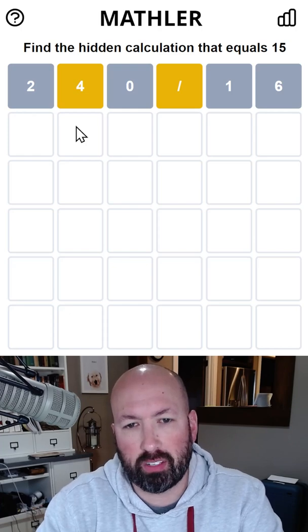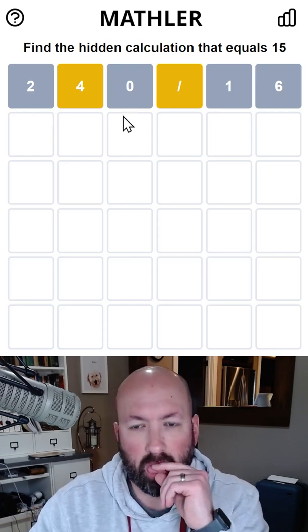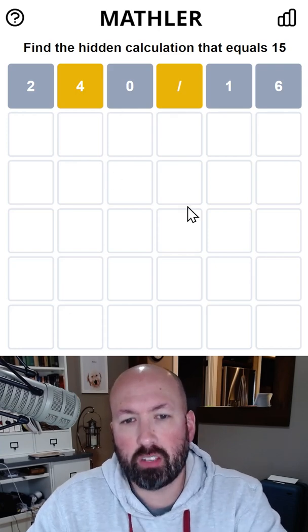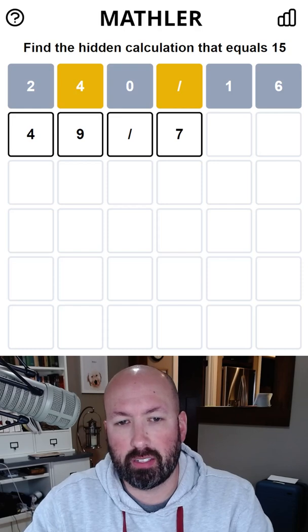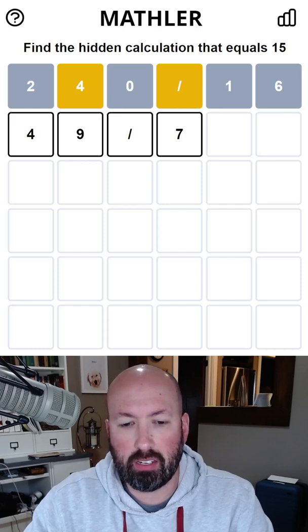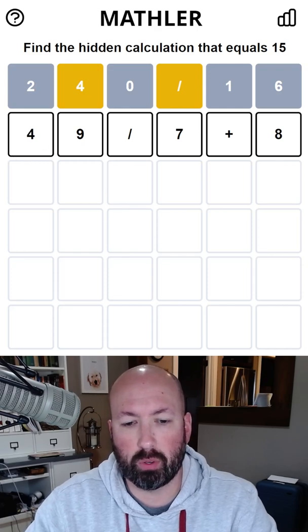If I do something in the 40s, I need to divide by like three or five or seven. You could do 49 divided by seven and then add eight. That seems good. That gets us seven, eight, and nine to check, and another spot for the four in the division.